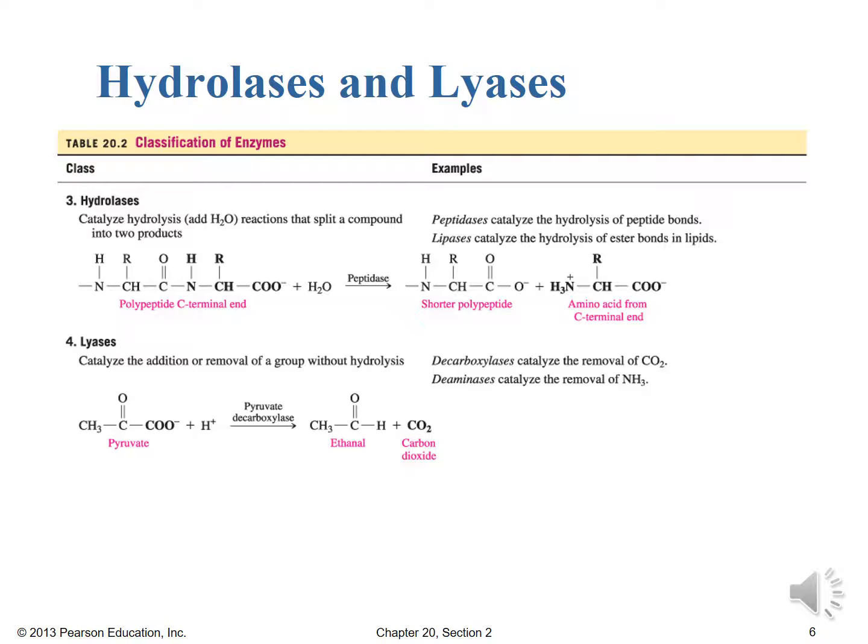This is how we find those primary structures by the way. If you were wondering last chapter how we decoded the primary structure for insulin it was by the use of these peptidases or at least hydrolysis reactions.